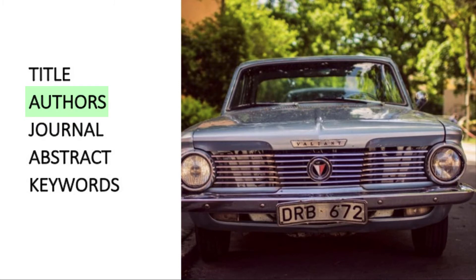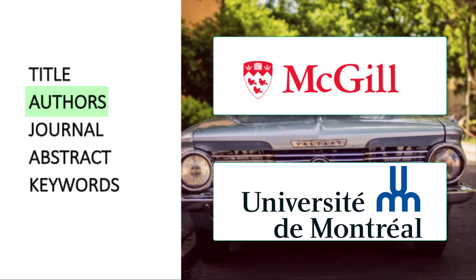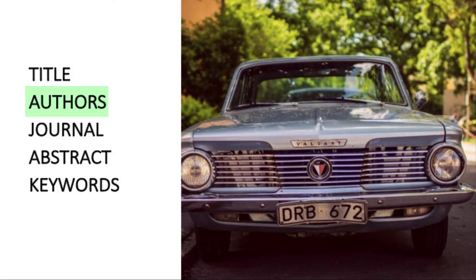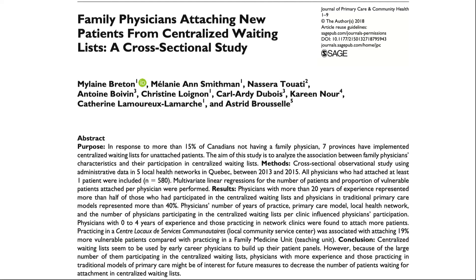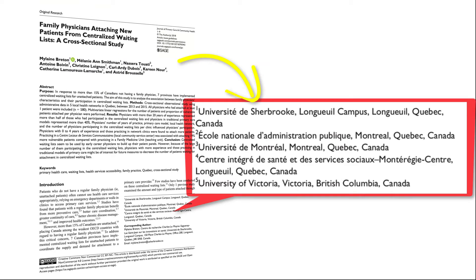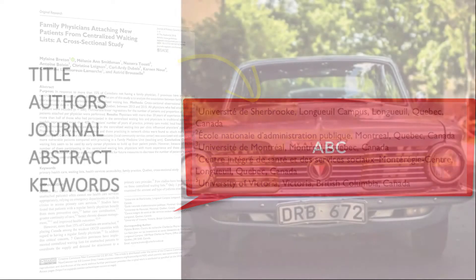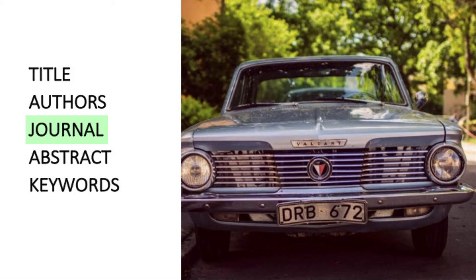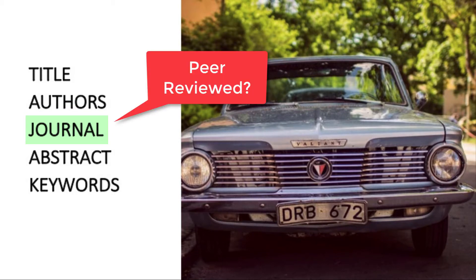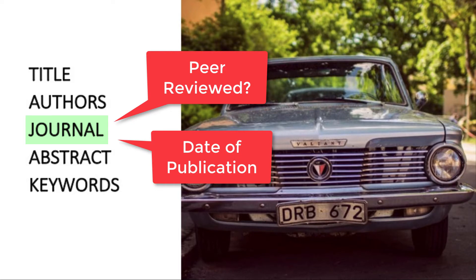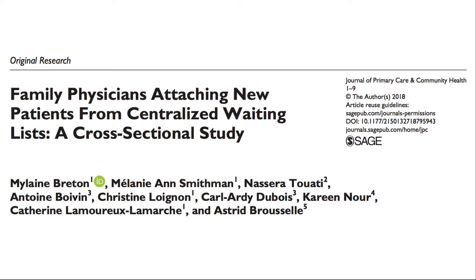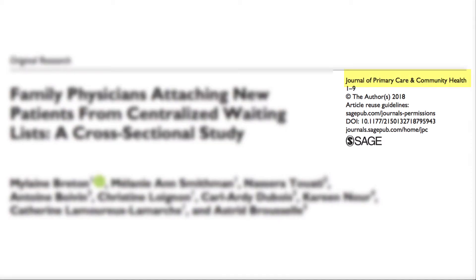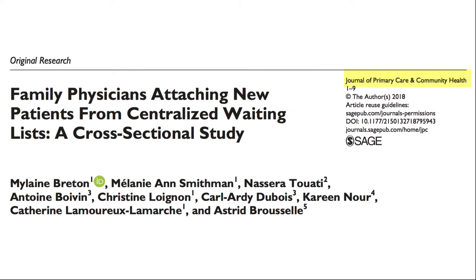The information about the authors will include names and their institutions. Some institutions are well respected; however, others may appear to be legitimate research institutions but are actually agenda-driven. In this article by Breton, you see who the authors are and their affiliations — the majority of them are academic, from known universities and public organizations. Also, take note of the journal in which it is published. Is it peer-reviewed, for example? And note the date of publication, as current research is more likely to be relevant to you. Here we see that this is the Journal of Primary Care and Community Health. You can also look up the journal on the internet to check its credibility.